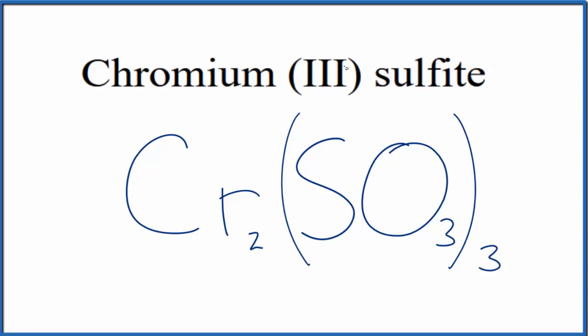We said chromium, each chromium here is going to have 3+, and the whole sulfite here, 2-. Three times 2-, that's 6-. Two times 3+, 6+. These two numbers, they add up to zero.